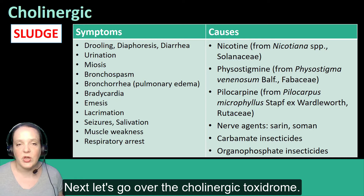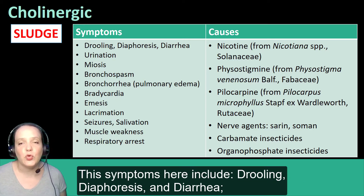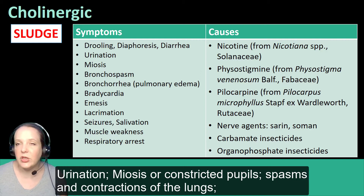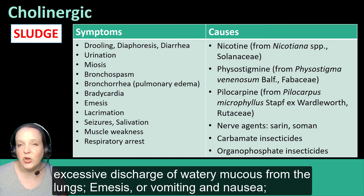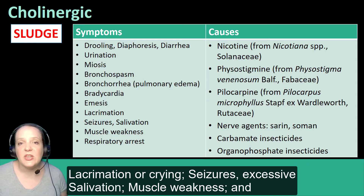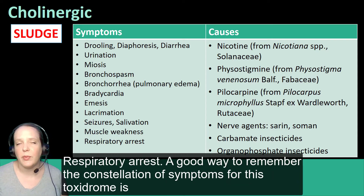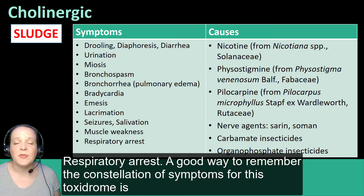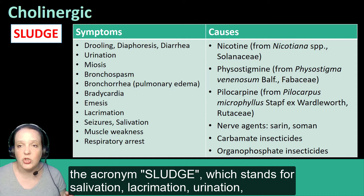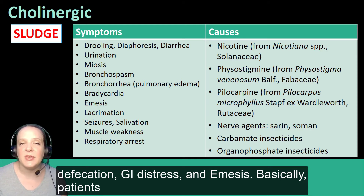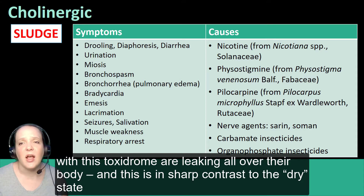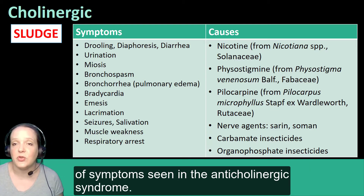Next, let's go over the cholinergic toxidrome. The symptoms here include drooling, diaphoresis, and diarrhea; urination; miosis or constricted pupils; spasms and contractions of the lungs; excessive discharge of watery mucus from the lungs; emesis or vomiting and nausea; lacrimation or crying; seizures; excessive salivation; muscle weakness; and respiratory arrest. A good way to remember the constellation of symptoms is the acronym SLUDGE, which stands for salivation, lacrimation, urination, defecation, GI distress, and emesis. Basically, patients with this toxidrome are leaking all over their body, in sharp contrast to the dry state seen in anticholinergic syndrome patients.